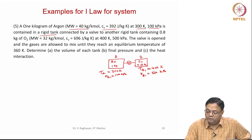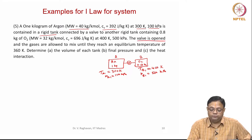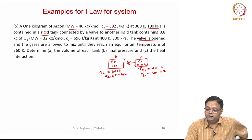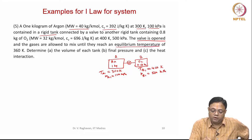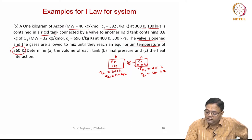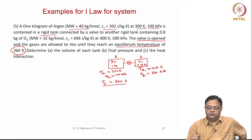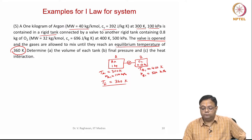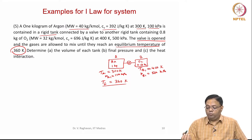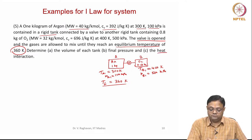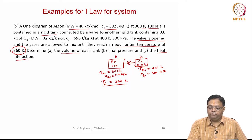Now, the valve is opened and gas is allowed to mix until they reach an equilibrium temperature of 360 Kelvin — that is, T_final equals 360 Kelvin. Once they mix, we have to calculate the heat interaction. First, what is the volume of each tank? Then, what is the final pressure?